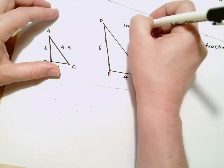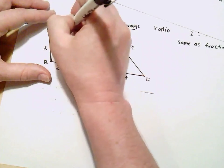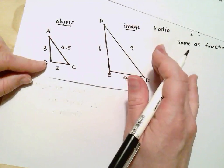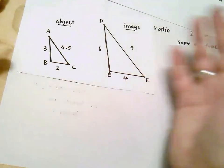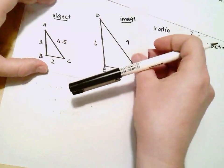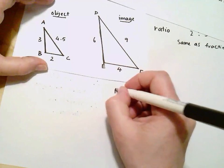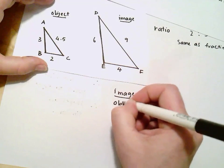We introduce this terminology called image and object. So the original shape is what we call the object. In this case, we'll assume it was this one because it's on the left. And the image is the shape that's been enlarged or potentially enlarged. So let's have a look. We're looking at the ratio in each case of the image to the object for each of those sides.